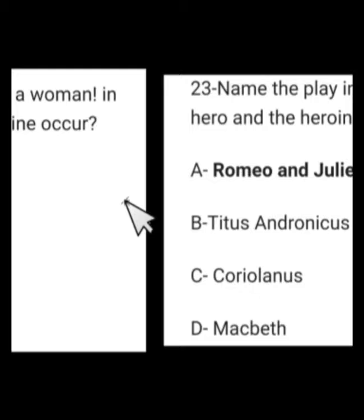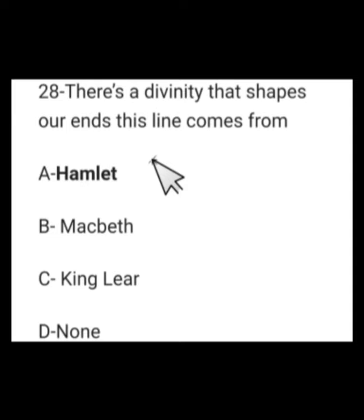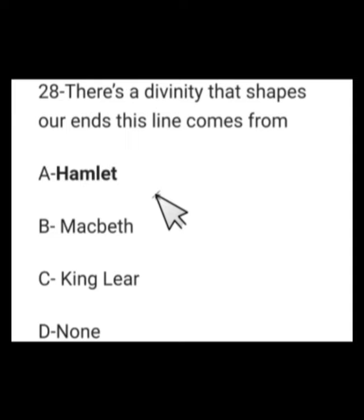Number 19: In which play does this line occur — 'Frailty, thy name is woman'? Options: Hamlet, Othello, King Lear, or Macbeth. This line is from Hamlet, written in 1599 to 1601. Number 20: 'There is a divinity that shapes our ends' — this line comes from which play? Options: Hamlet, Macbeth, King Lear, or none. The right answer is Hamlet. Hamlet tells his friend Horatio this in Act 5, Scene 5.